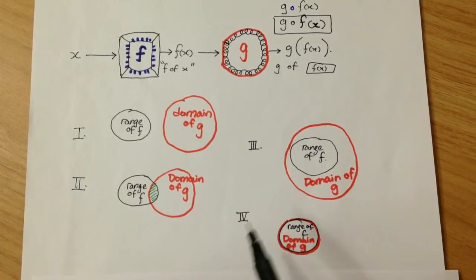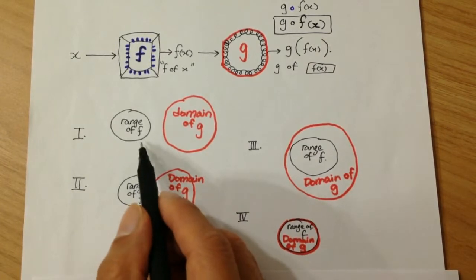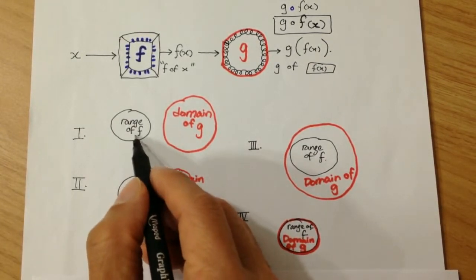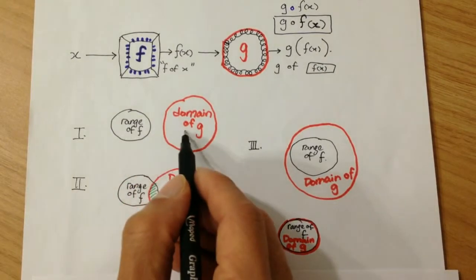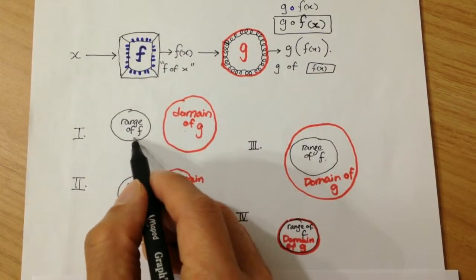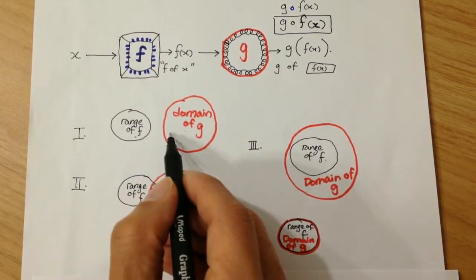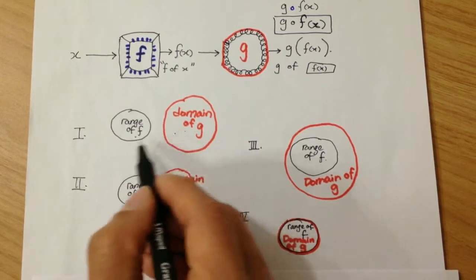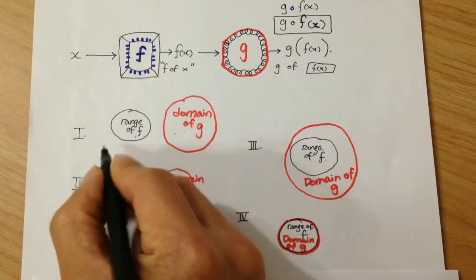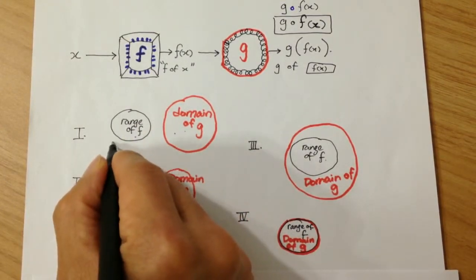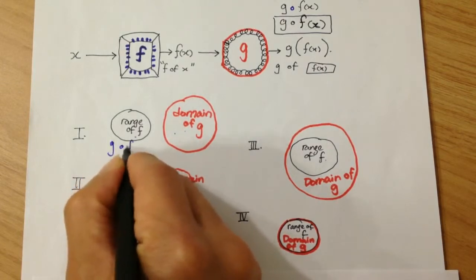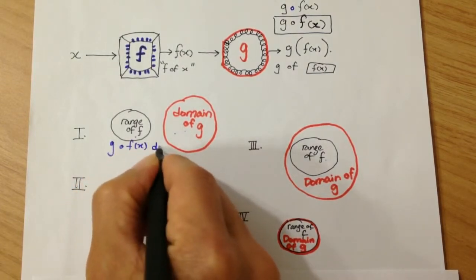Welcome back. So obviously, this doesn't, because the range of f is not even part of the domain of g. That means the output of f is not acceptable into g. So in this case, the composition does not exist. In this case g of f of x does not exist.